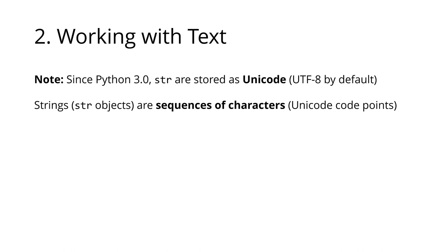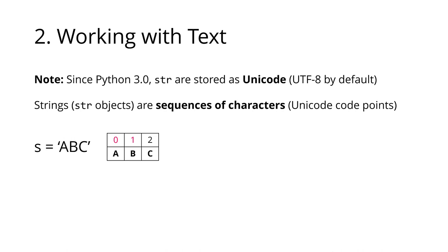Strings, or `str` objects, are just sequences of characters. They are defined within quotation marks — you can use single, double, or even triple quotation marks. Internally, a string is just a sequence of characters — or more precisely, Unicode code points. We can treat a string almost like a list: we can access individual characters by index. We can also do slicing — using a start and stop index to get a portion of the string.